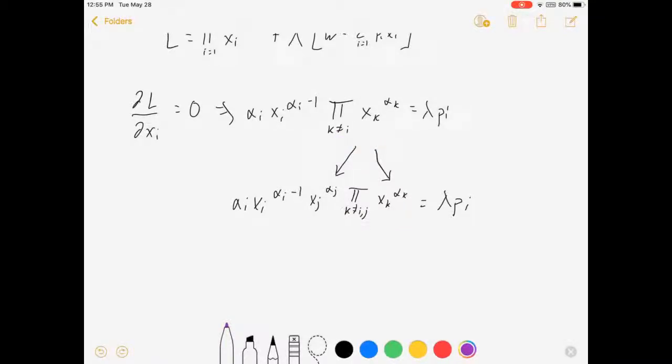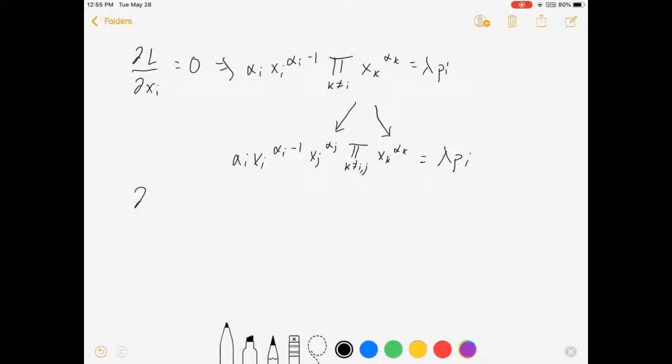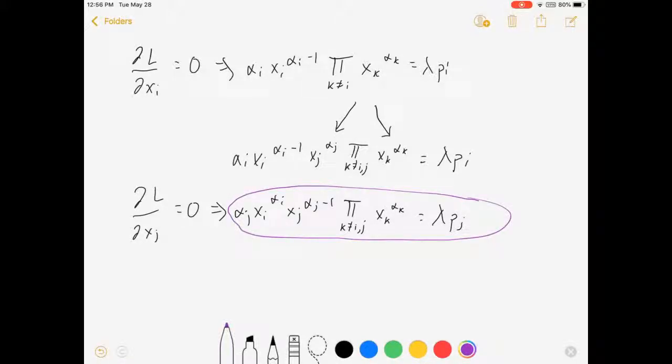And that should make sense here shortly, because now I'm going to take the derivative of the Lagrangian with respect to good j and set that equal to 0. So let's see, that's alpha j xi to the alpha i xj to the alpha j minus 1 times the product for k not equal to i or j of xk to the alpha k equals lambda pj. All right, so what are these two equations telling us? We've got a first order condition for the jth dimension, and we've got a first order condition for the i-th dimension.